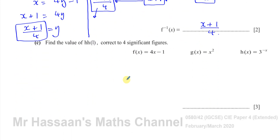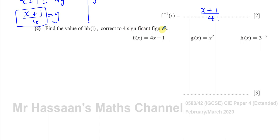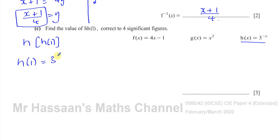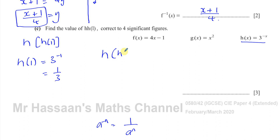Now for part c, it says find the value of h(h(1)) correct to 4 significant figures. This is a composite function. You've got to first find what h(1) is. h(1) means replace x with 1 in h(x) = 3 to the power of negative x, so h(1) = 3 to the power of negative 1. From the law of indices, a to the power of minus n is 1 over a to the n, so 3 to the power of minus 1 is one third. So h(1) = one third. Now we've got to find h(h(1)), which is h(one third).